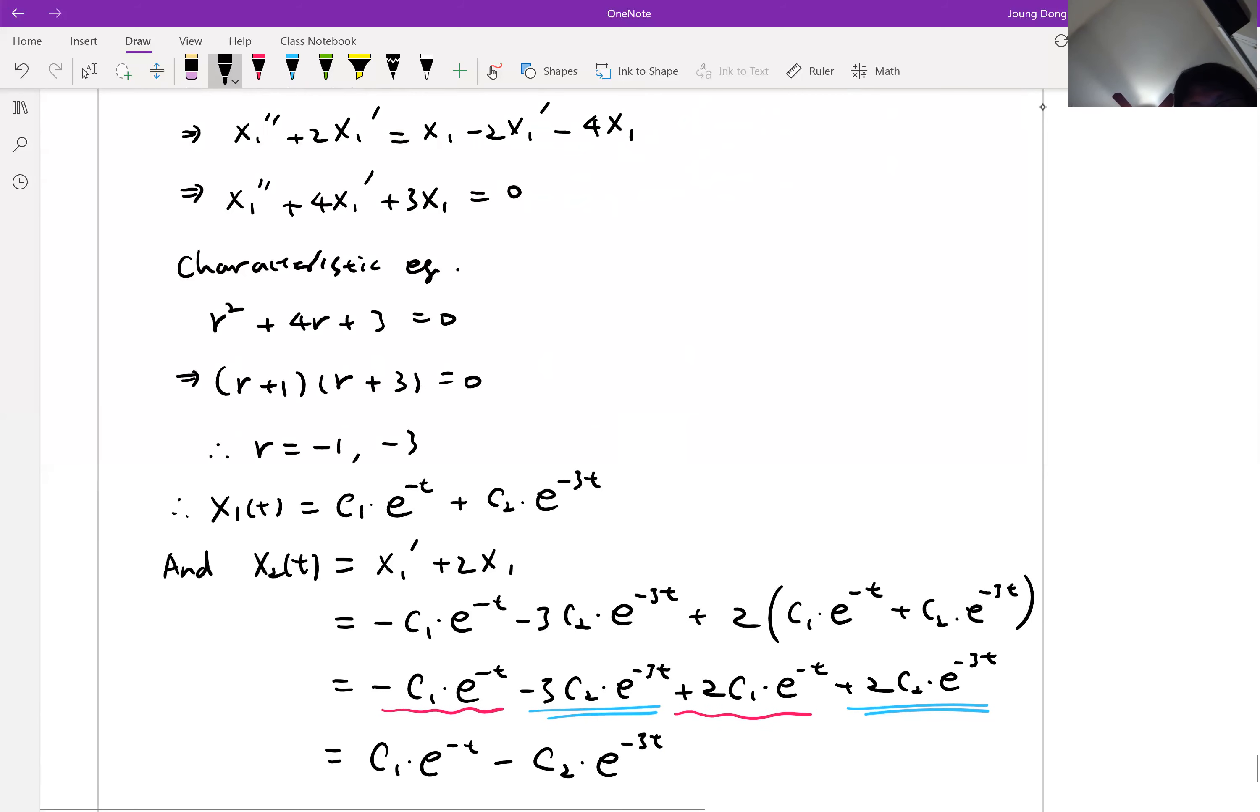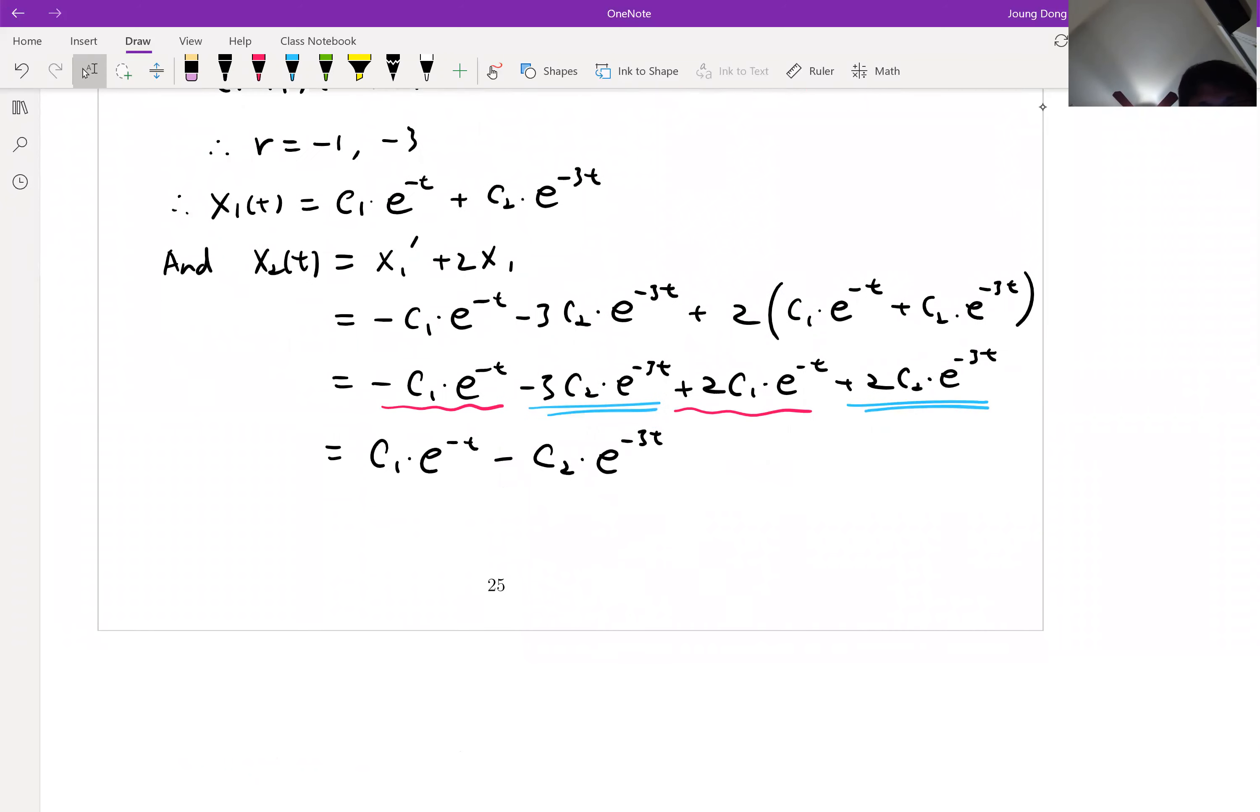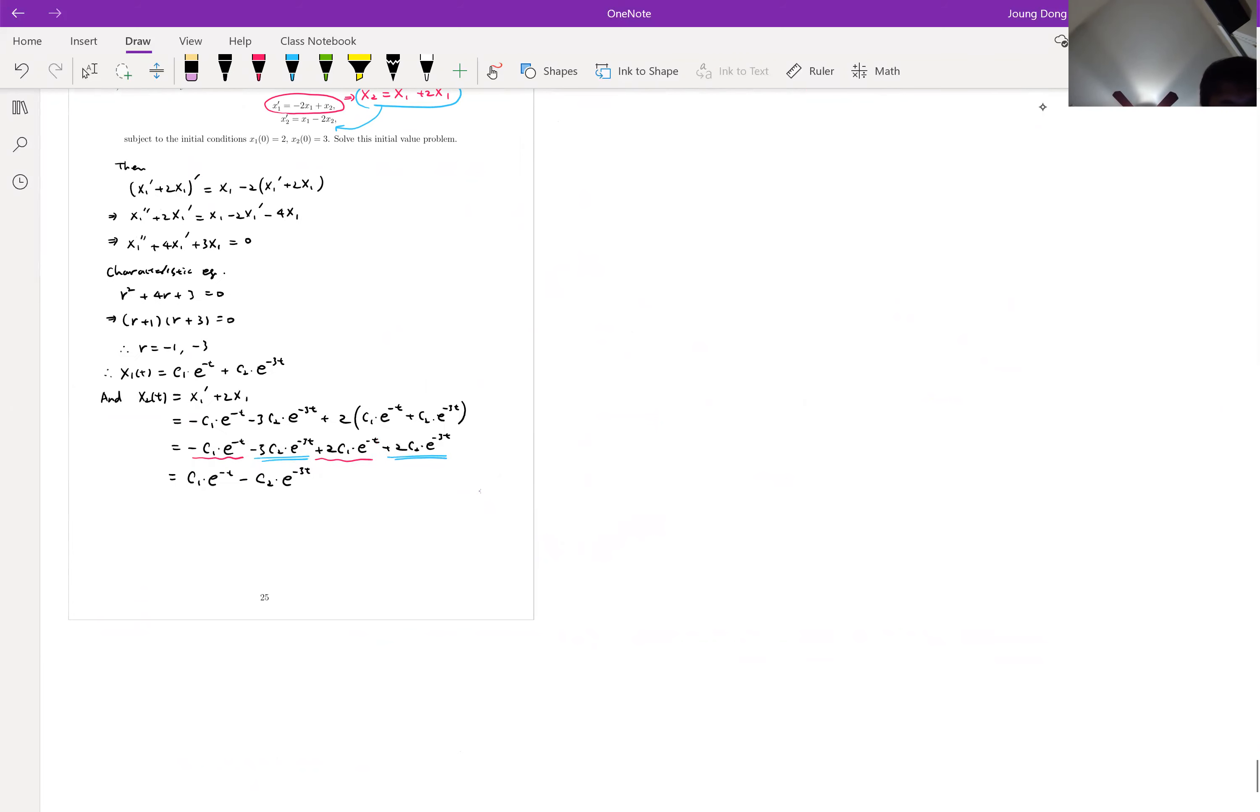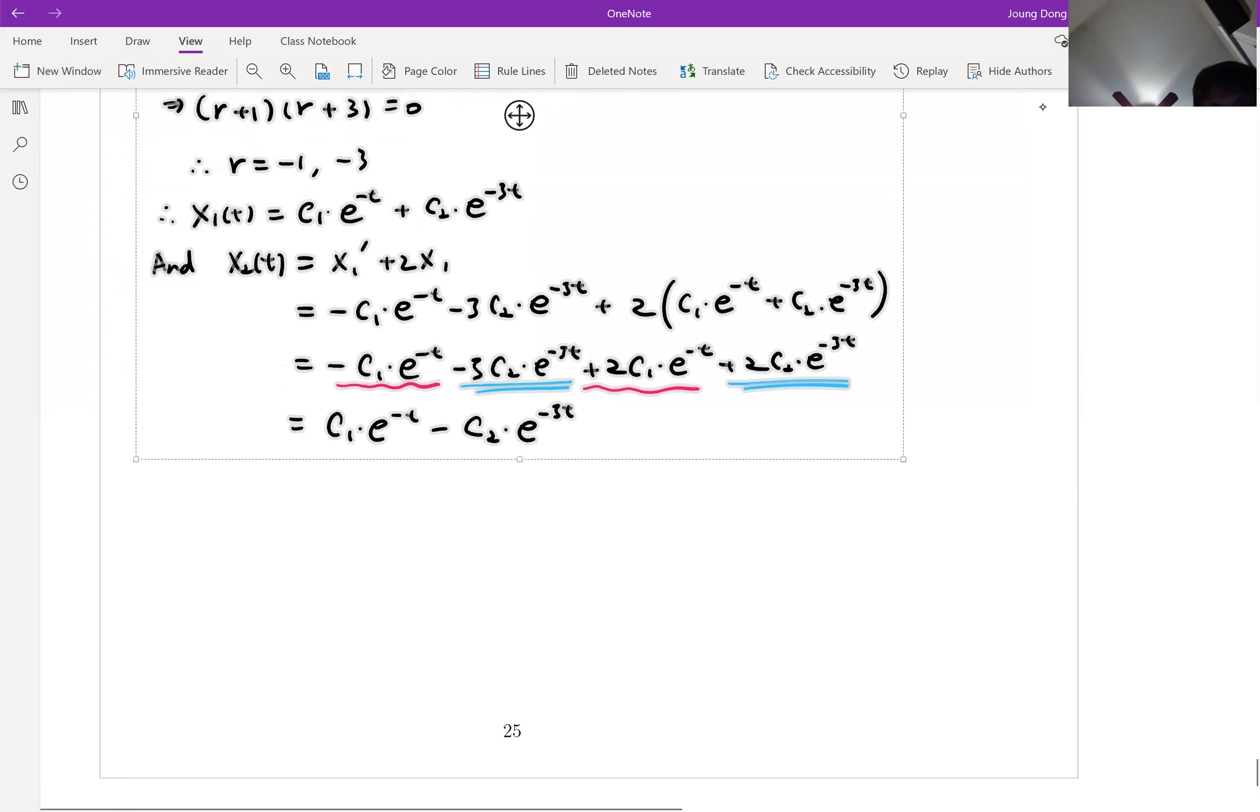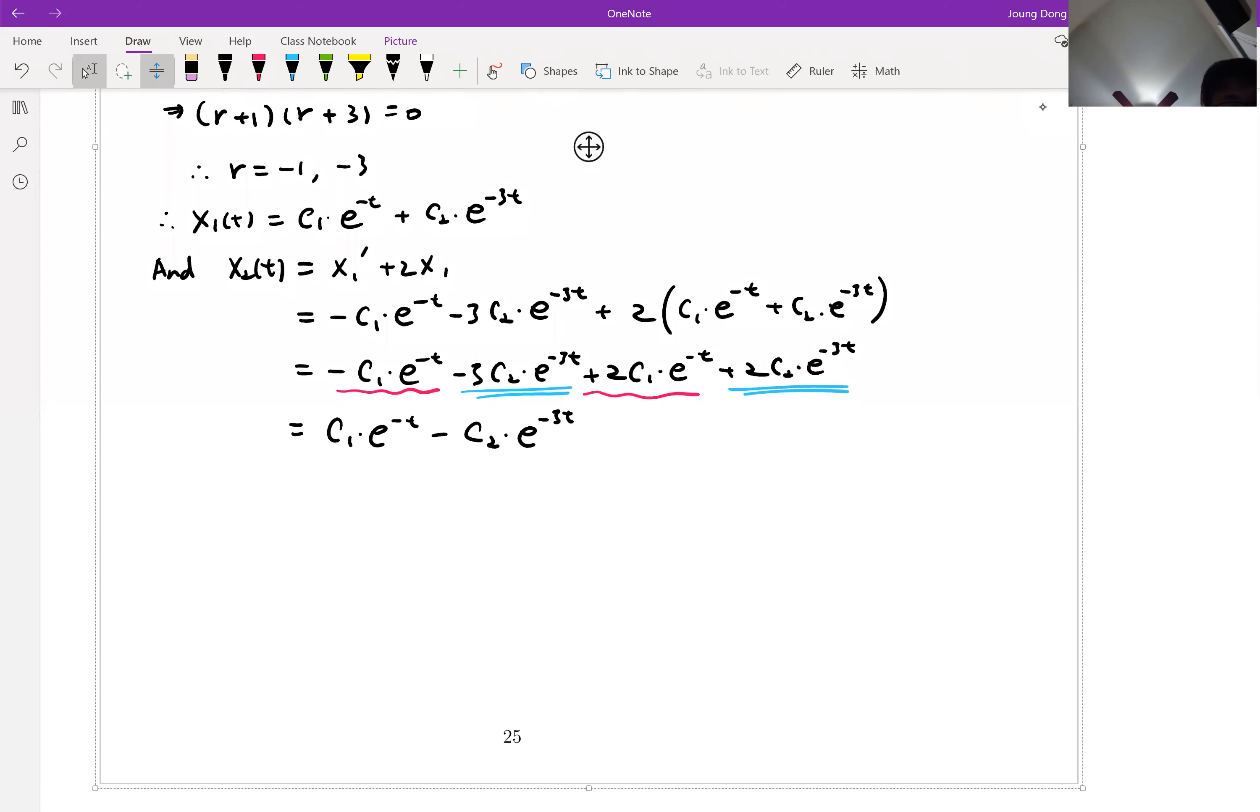And now we're going to use the initial conditions. Look at that. Initial condition is given here, right? x1(0) equal to 2 and x2(0) equal to 3. Let me come back. So we do not have enough space. Let me make it a little bit smaller. There we go. I think this is easy. Let me use the initial condition. There we go.